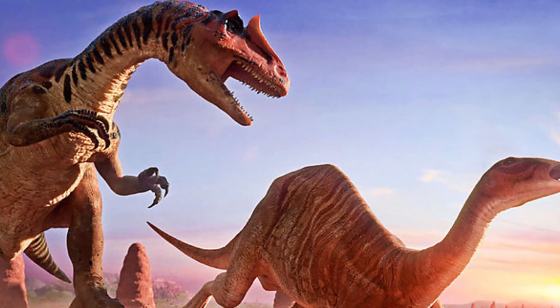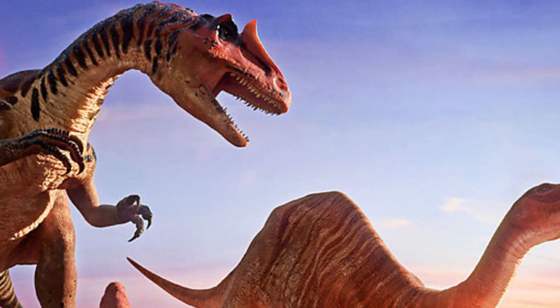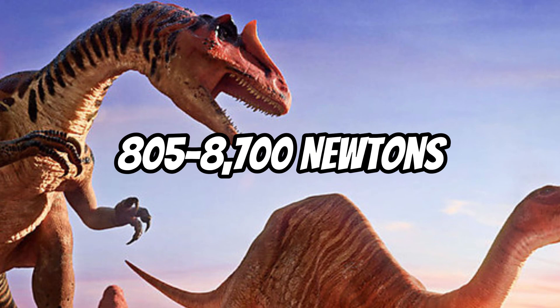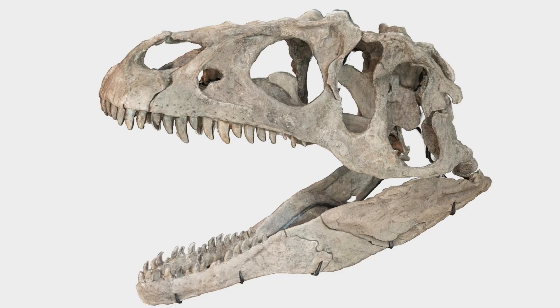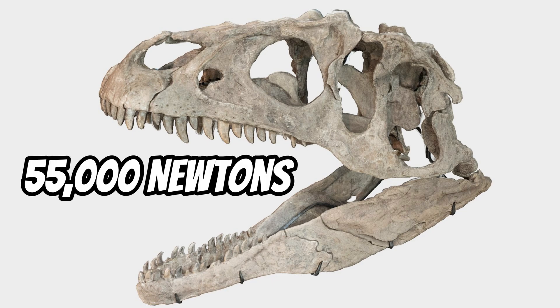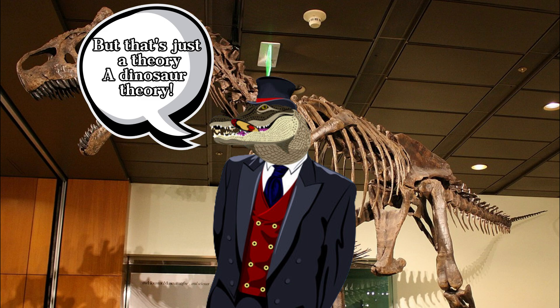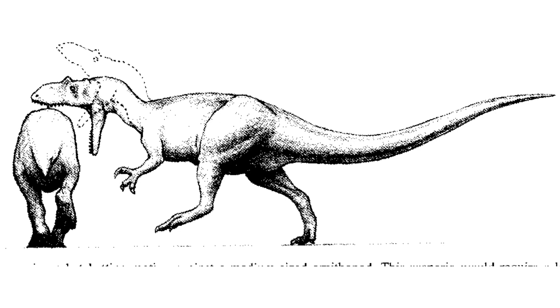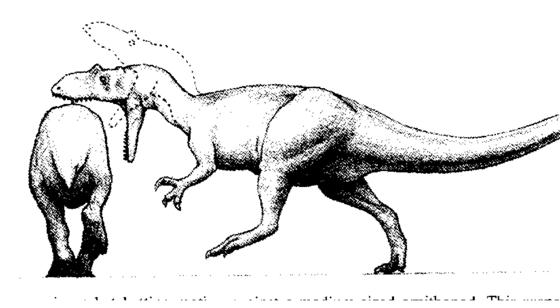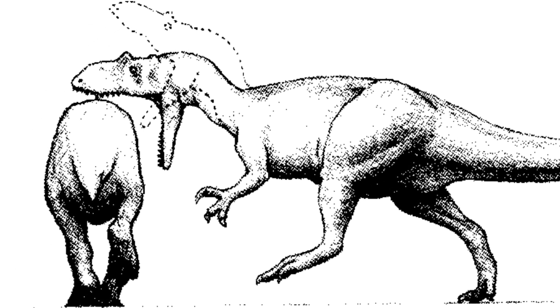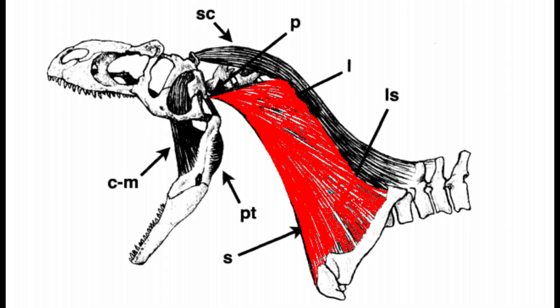By using jaw muscles only, it could produce a bite of 805 to 8,700 newtons. What's interesting is that the skull could withstand nearly 55,000 newtons of force against the tooth row. This is where the hatchet theory comes in for Allosaurus — it hunted and attacked much like a hatchet, using its powerful neck to slam its skull against its prey. This would pierce, slice, and cut the prey, ultimately causing them to bleed out.